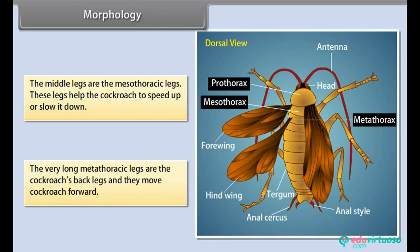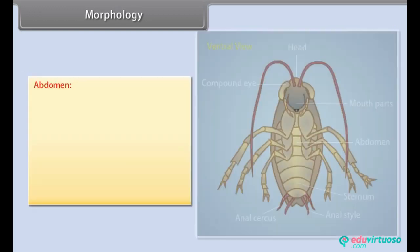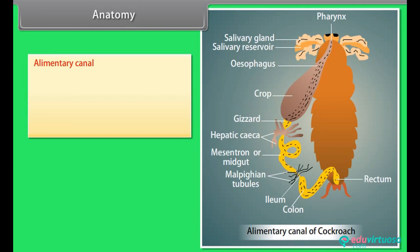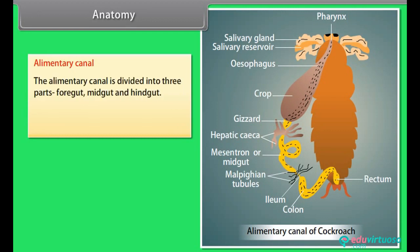The cockroach has a segmented abdomen that contains the internal organs. A tube-shaped heart moves blood to organs and tissues. The blood is colorless as it does not use hemoglobin to carry oxygen. An aorta carries blood to particular organs; most of the blood travels through a network of spaces called a hemocoel.